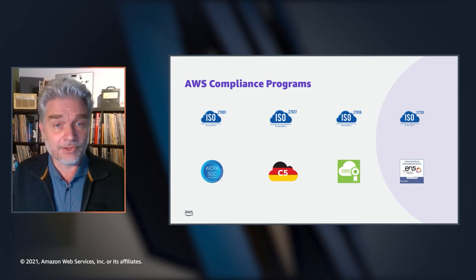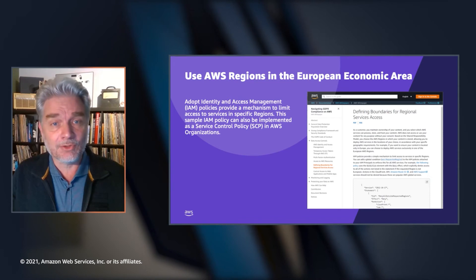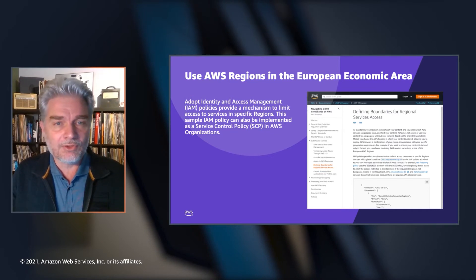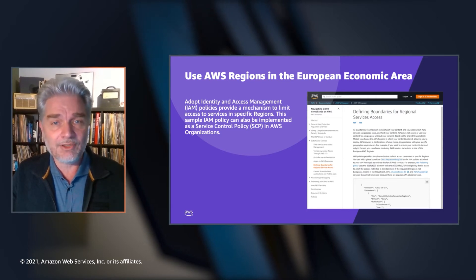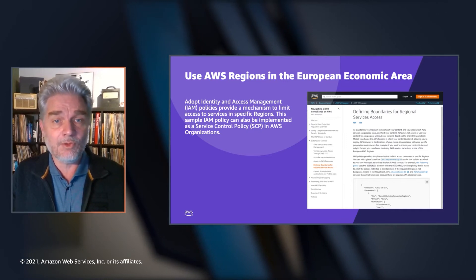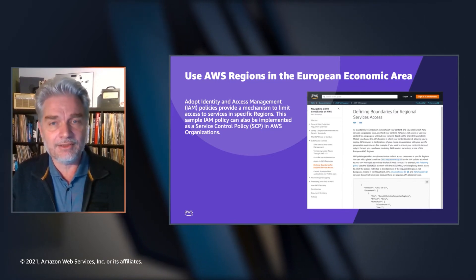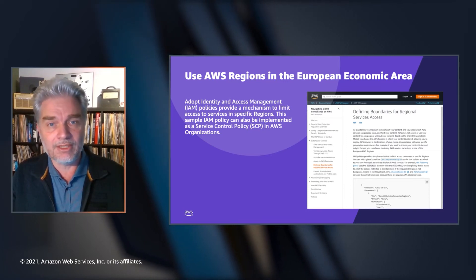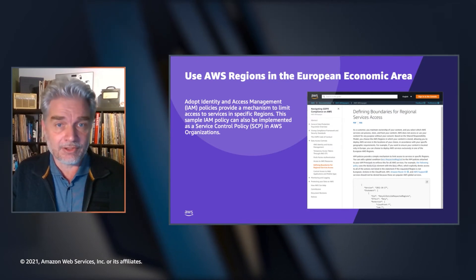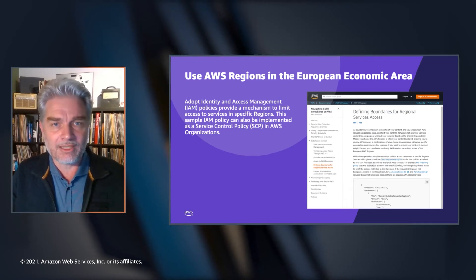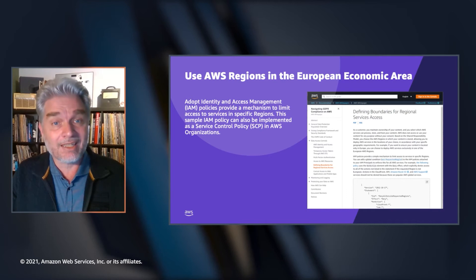I want to highlight another measure under customer control. AWS has the concept of a region, which is a physical location around the world where we cluster data centers. We call each group of logical data centers an availability zone, and each AWS region consists of multiple isolated and physically separate availability zones within a geographic area. Today we have five AWS regions in the EU, in Ireland, Germany, France, Sweden, and Italy, and we announced a new region in Spain. Customers can use AWS services with the confidence that their customer data stays in the AWS region they select. Only a small number of AWS services involve the transfer of customer data, for example to develop and improve those services, where customers can opt out of the transfer, or because transfer is an essential part of the service, such as a global content delivery service.